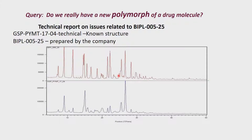The next issue which normally comes up in the pharma industry — I will take two examples sorted out in our laboratory using powder diffraction and profile refinements. A question came from a company; I am going to use technical numbers now. Companies do not allow use of the compound name because of what we call the CDA agreement. The technical report concerned a compound called BIPL00525, and the known structure reported in literature — for which there was a patent — is called GSP PYMT 1704 technical.